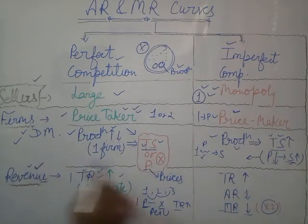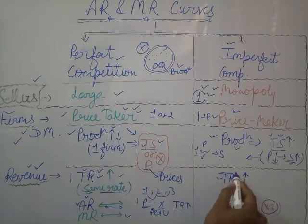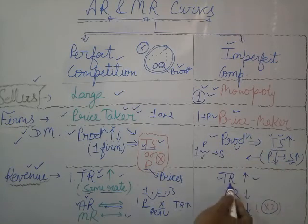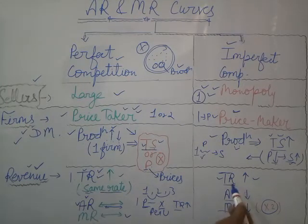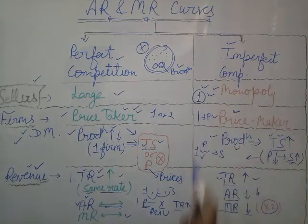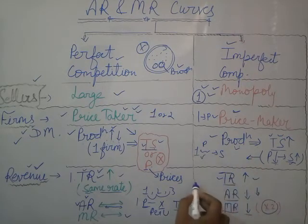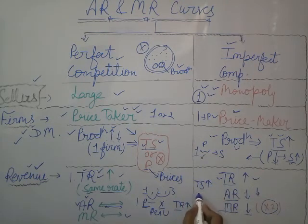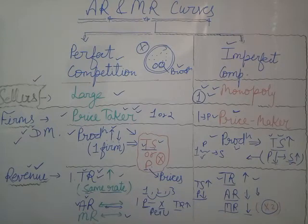Now in case of imperfect competition, let us see how revenue works. Total revenue will also increase — as you increase the number of units, your total revenue keeps going up. For average revenue, however, it will decrease in case of imperfect competition. This is because if a firm wants to increase total supply, they need to decrease prices.